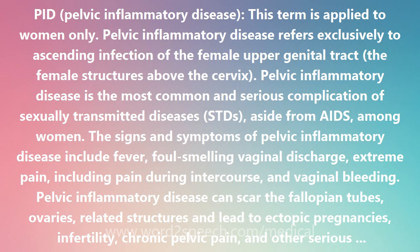The Pelvic Inflammatory Disease diagnosis can be difficult to make. If symptoms such as lower abdominal pain are present, a physical exam may be done to determine its location. A check for abnormal vaginal or cervical discharge, as well as for evidence of cervical chlamydial infection or gonorrhea, may also be performed. Other tests, such as a sonogram, endometrial biopsy, or laparoscopy, may be used to distinguish between PID and other serious problems that may mimic PID.